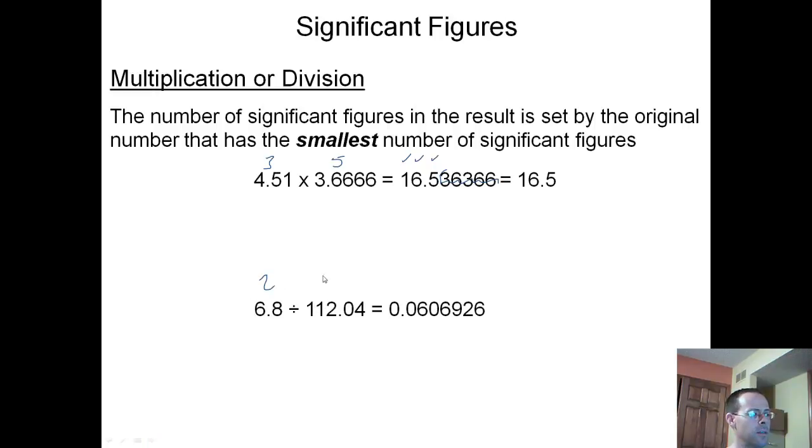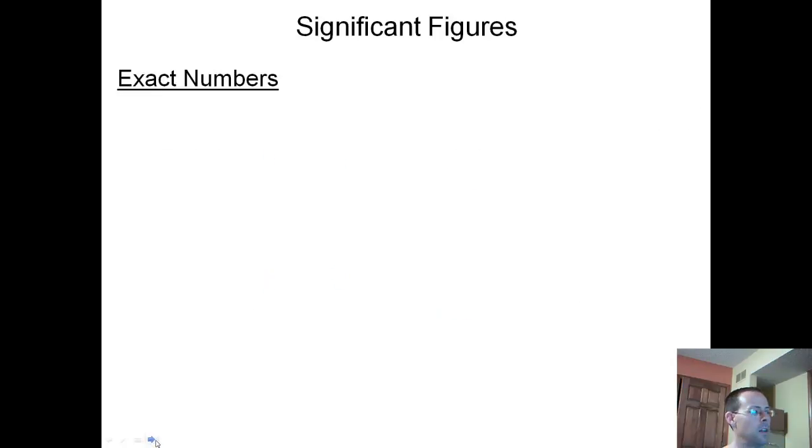If we divide, this number's got 2, this number has 5, so my answer has to have 2. Is this 0 significant? No, it's leading. Is this 0 significant? No, it's leading. Is this one? Yes, that's my first sig fig. And this 0, this last 0 is my last significant column. Am I going to leave it at 0? No, because this 6 right here is after the 0. It's going to round that 0 up. But I'm not going to keep any of these numbers. So really, my rounded answer is 0.061.